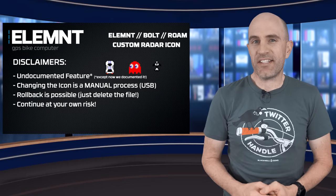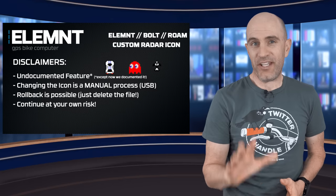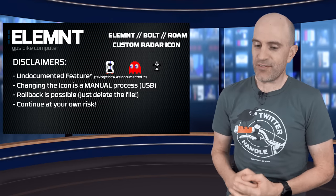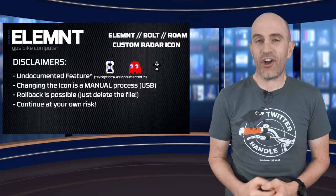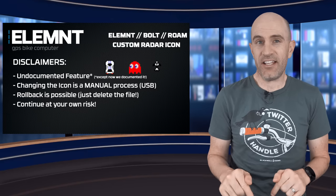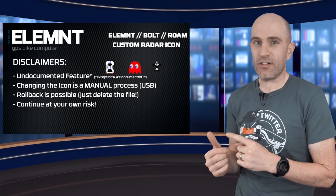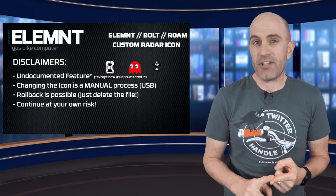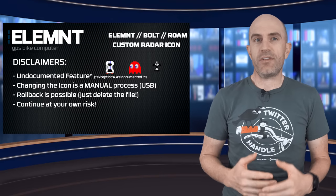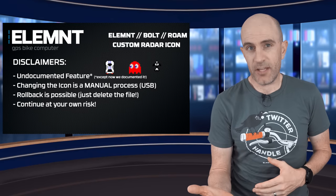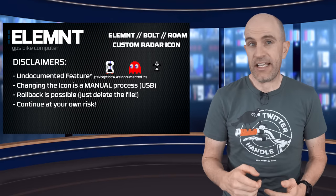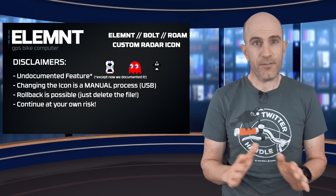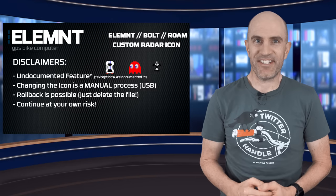With firmware 6023 I can let you in on the secret, but a few disclaimers first. This is an undocumented feature, so you're only going to find it here and also over on DCRainmaker.com because we share notes. Changing the icon is a manual process — there's no ability to do this within the Wahoo Element app. Rollback is pretty easy: just delete the file that we've put in place. From here on, continue at your own risk.